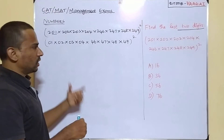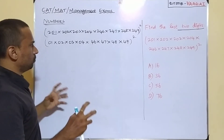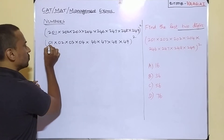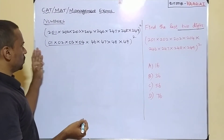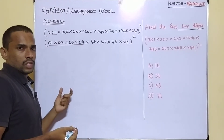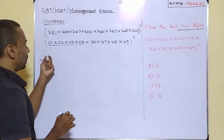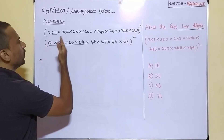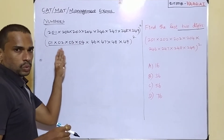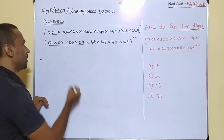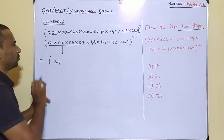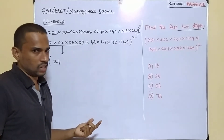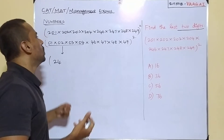We can rewrite the entire expression as (01 × 02 × 03 × 04 × 46 × 47 × 48 × 49) whole square. Since we are asked to find only the last two places, playing with the last two digits gives the same correct answer. Now let's group the terms. The first four numbers: 1 × 2 × 3 × 4 = 24. So the last two digits of the first group is 24.